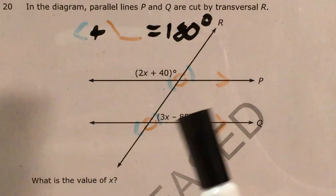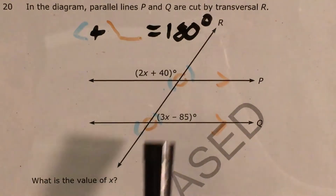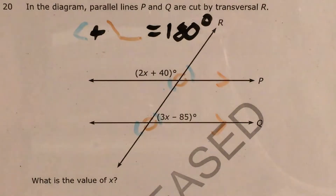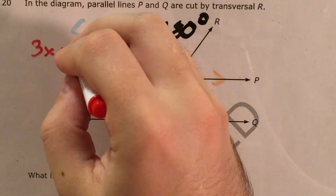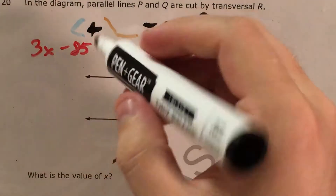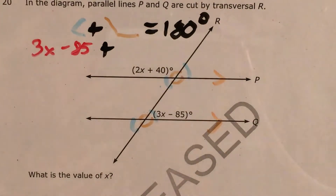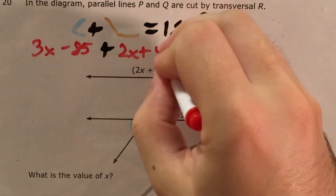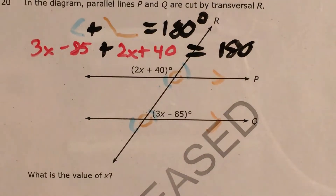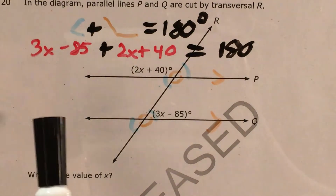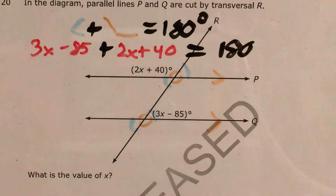Let's go ahead and see what kind of angles we have. 3x minus 85 is on a small angle, and 2x plus 40 is on a big angle. So I'm going to set this up: the small angle, 3x minus 85, is going to be added to 2x plus 40, and I know that that's all going to equal 180.